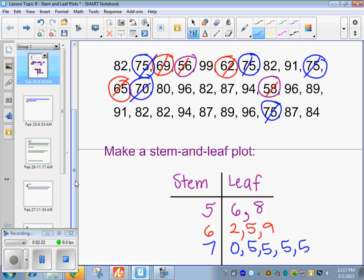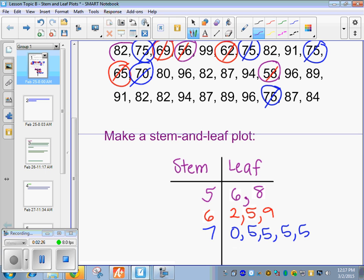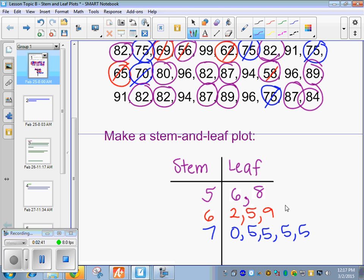And how about in the 80s, what do we have? 82, 82, 82, 80, 82, 87, 87, 89, 87, 84, 89, 82. So what's the first one going to be? 80. What's next? 82. How many do we have? 1, 2, 3, 4, 5 82s.